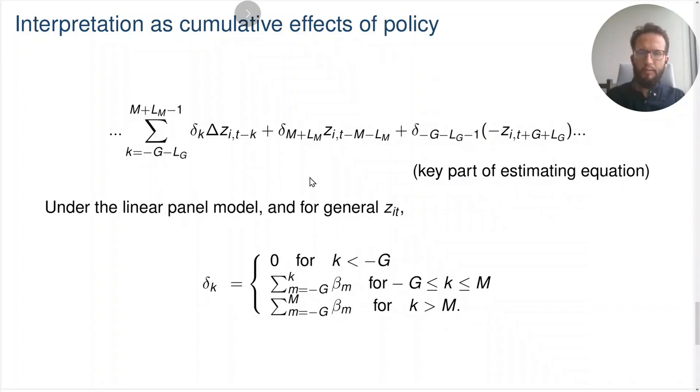Under staggered adoption, but also outside of staggered adoption and in the general case where the policy variable may be continuous, the coefficients delta K have an interpretation as cumulative effects of the policy. In a sense, what gives these coefficients their interpretation as event study coefficients is the estimating equation. The coefficient delta K is going to be the sum from minus G to K of the beta M coefficients that came from our linear panel model, and it's going to be the cumulative effects of the policy K periods after the policy was adopted.